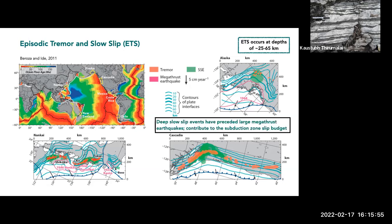These deep slow slip events have preceded large megathrust earthquakes before, and they're definitely contributing to the subduction zone slip budget, but we're not really sure how. Part of the reason we're not sure is because we still don't know what mechanisms are responsible for slow slip and tremor. We've observed them geophysically, but we don't actually mechanistically know what's happening.